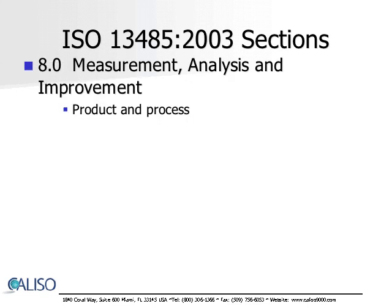Section 8.0, Measurement Analysis and Improvement. This section talks about how to improve not only the product but the process by which it is manufactured. Also, this section addresses how to improve your quality management system — continually improve and maintain, implement and maintain. Those are consistent words throughout this standard regarding the effectiveness of the quality management system.